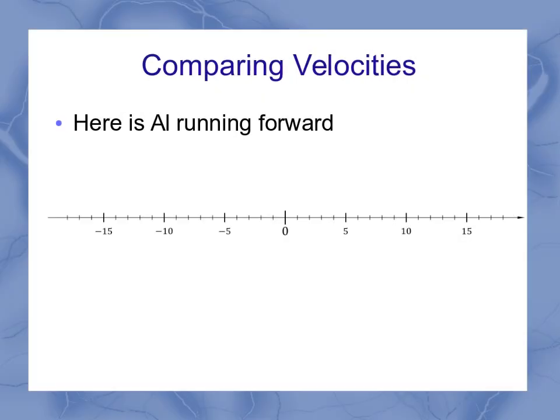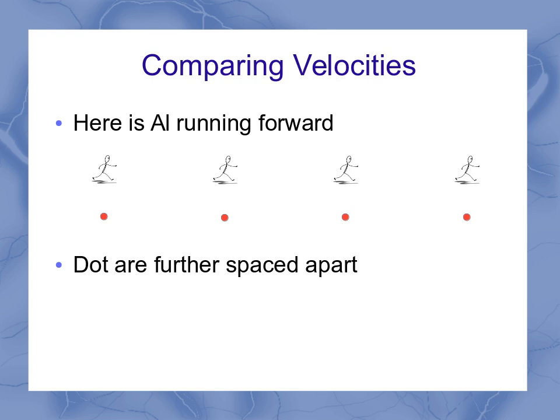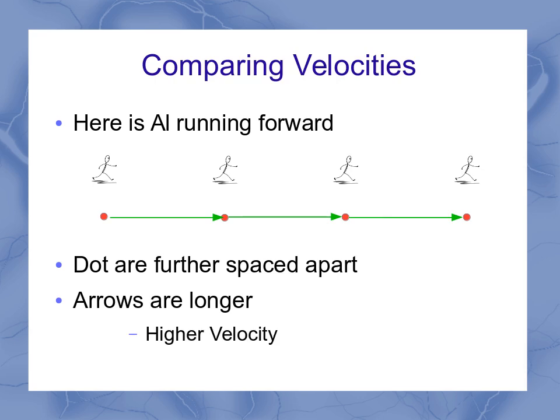Well, we can also compare velocities. It started out with Al walking. Now he's running. And you'll notice that each second, he's covering a lot more distance than he did when he was just walking. So that means our dots are spaced much further apart. Or you can think of it as the arrows are much longer. In either case, that means you've got a higher velocity. You've moved a longer distance in that same amount of time. So remember, dots that are further spaced apart represent higher velocities. Dots that are closer together represent smaller velocities.